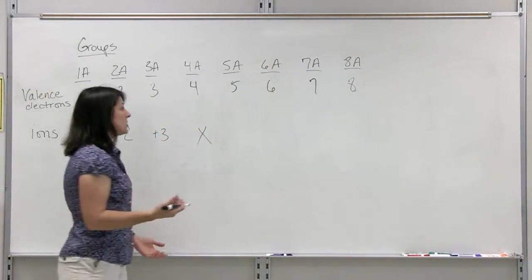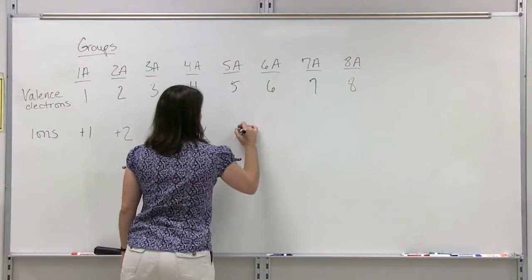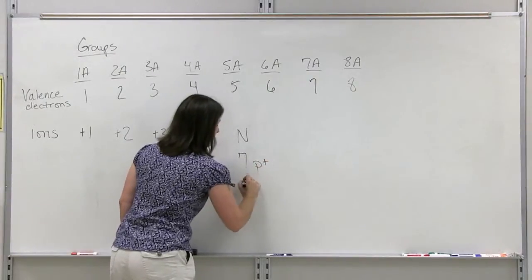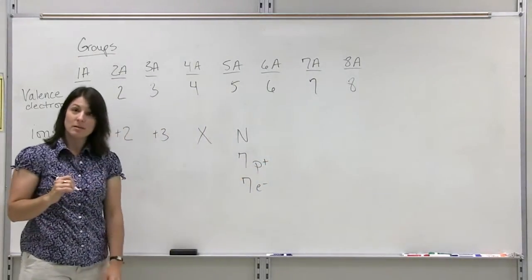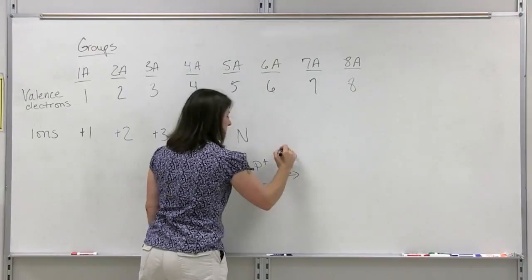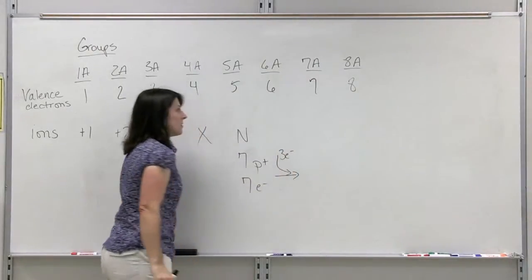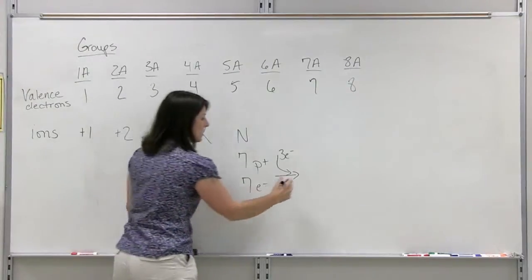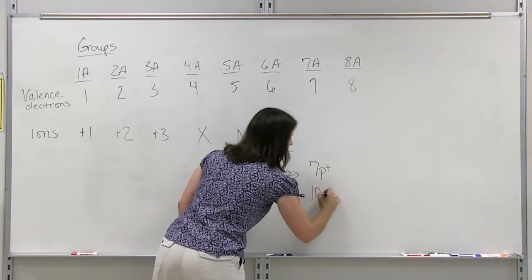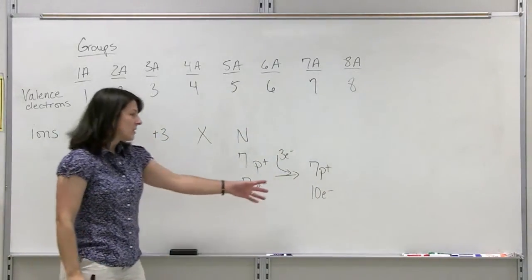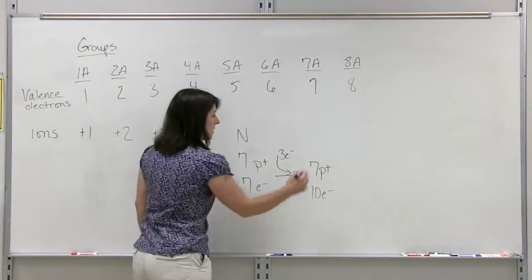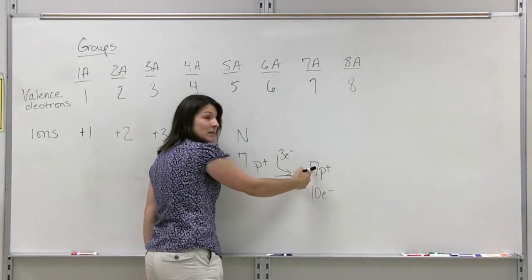If we have something like nitrogen. Nitrogen for example, has seven protons, seven electrons. In this case, to form an ion, it's going to gain, we're going to add three electrons. When we do that, we still have seven protons, it's still nitrogen, but now we have ten electrons. This is going to give us a full set. It's going to look like the noble gas neon, which has ten electrons. Now we have more negatives than positives.